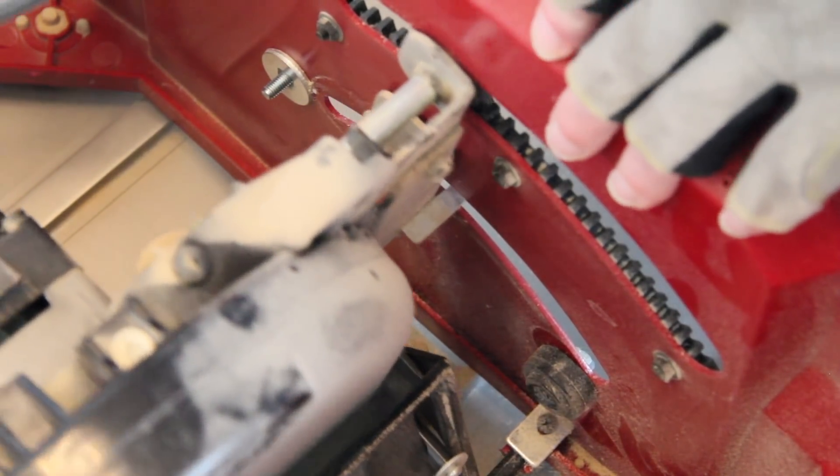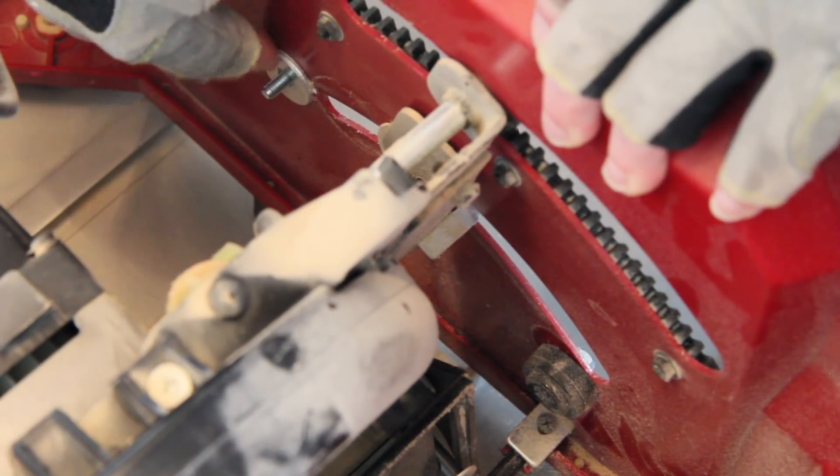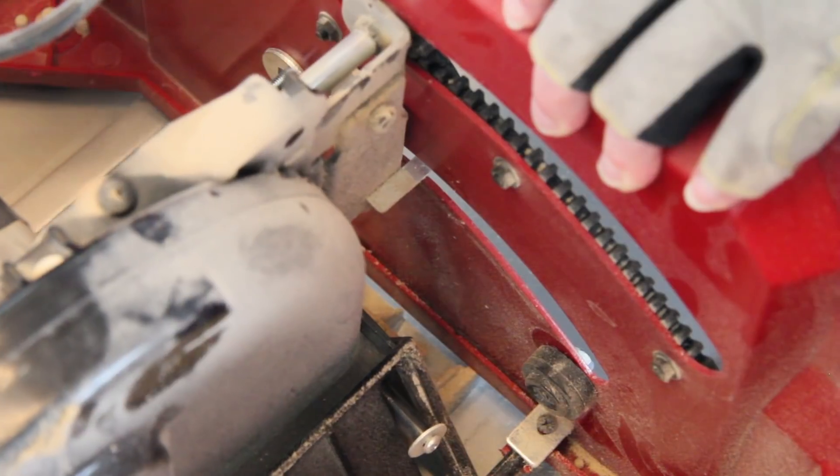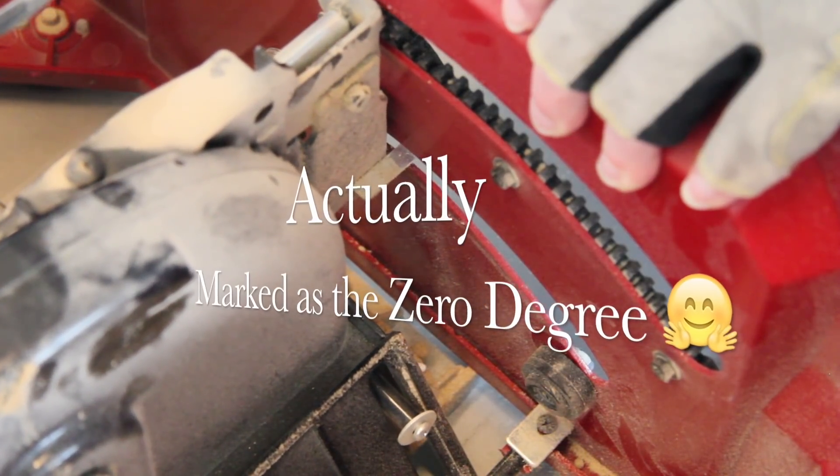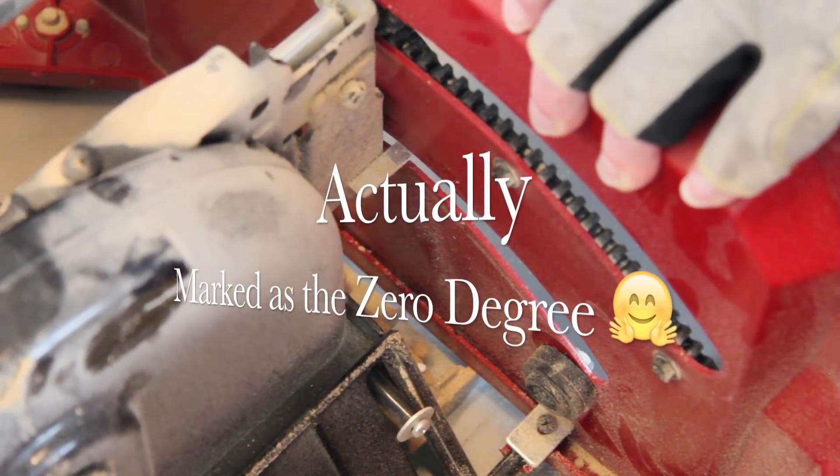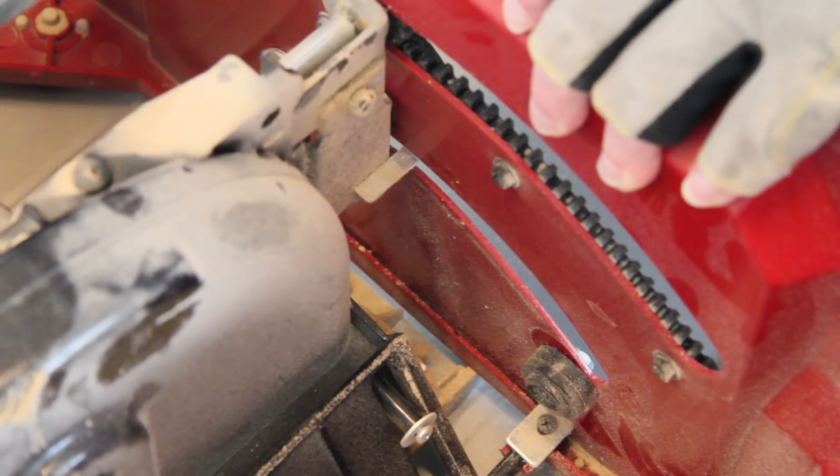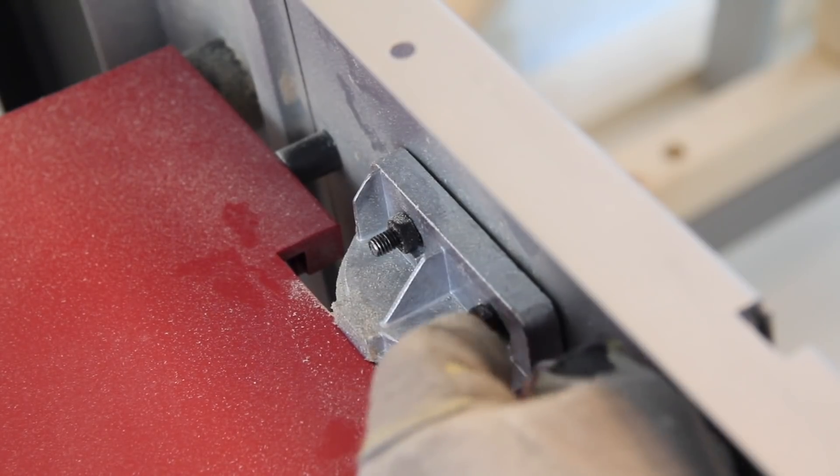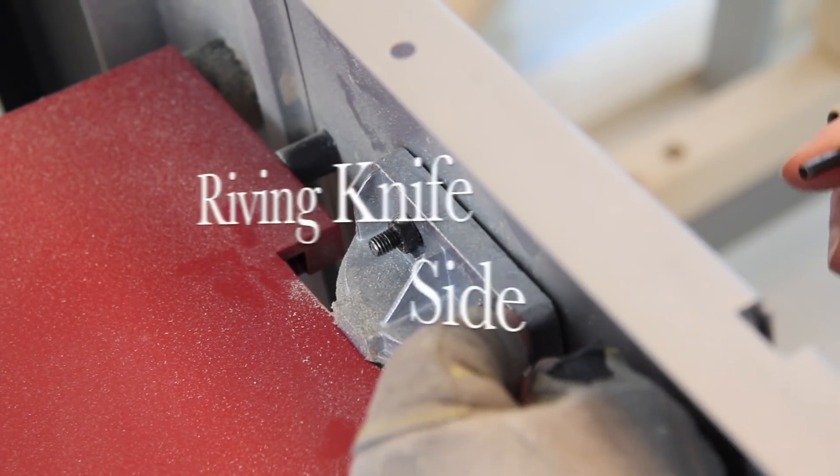The adjustment on this side is just the end stops of this beveling mechanism. So what I can do is I can adjust this one so that when I move it to the 90 degree position, it doesn't go further than keeping the blade parallel to the table.